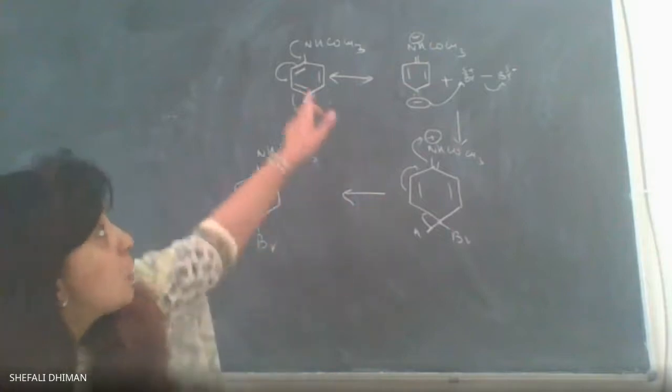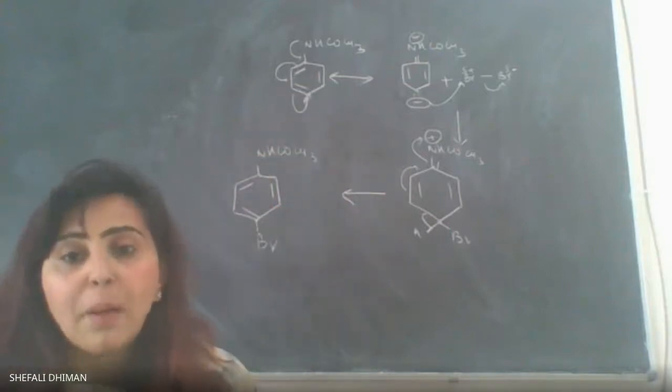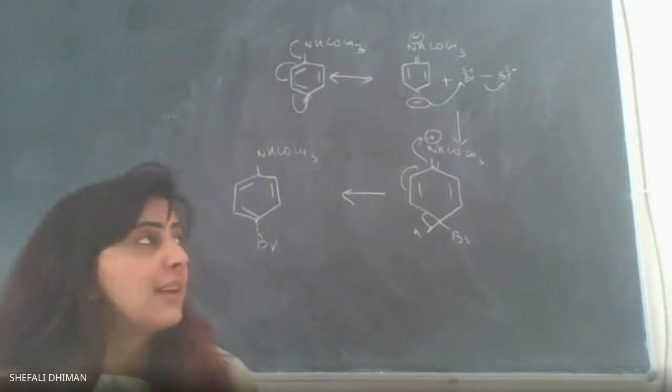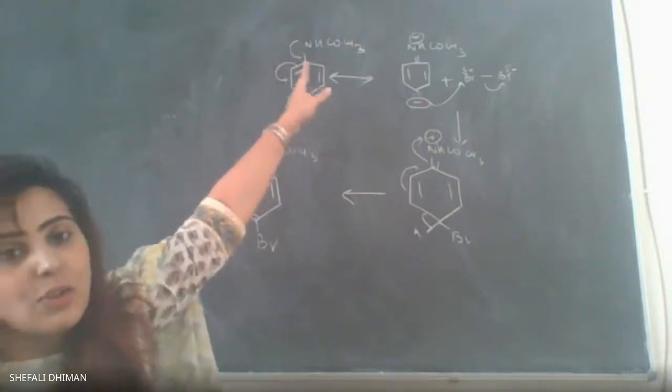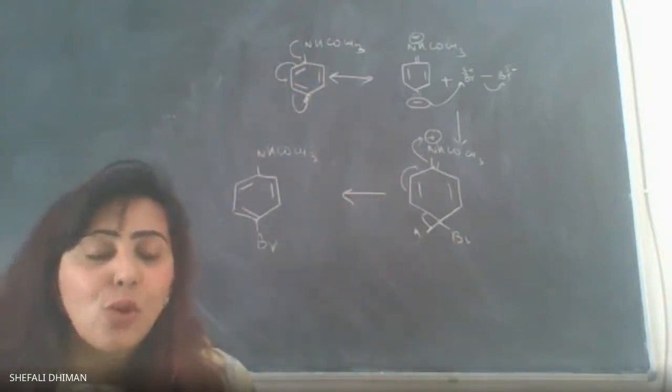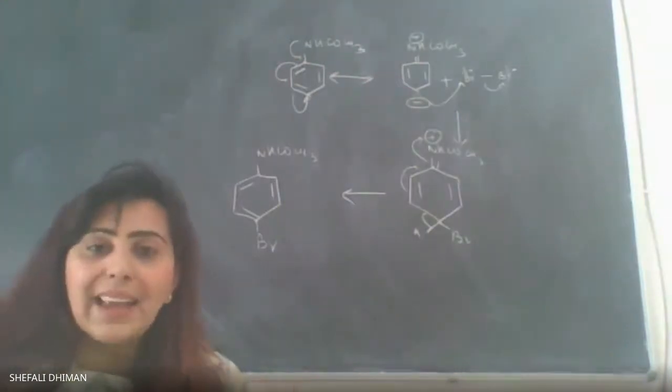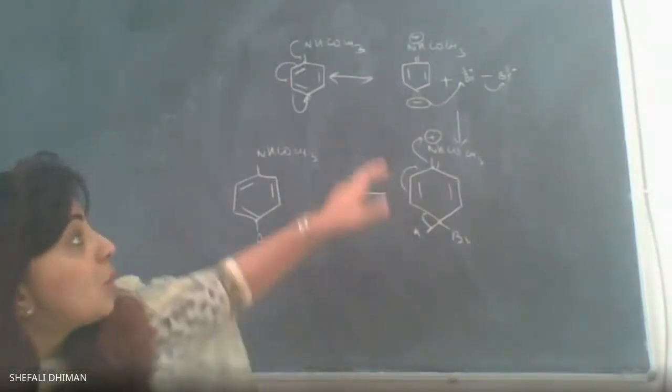So for that we protect the NH2 group by reacting it with acetic anhydride to form acetanilide. This NHCOCH3 group is a bigger group. It is not so activating like NH2 or OH.